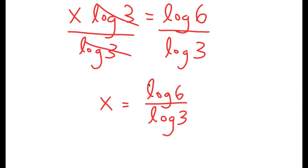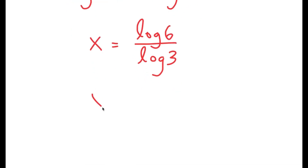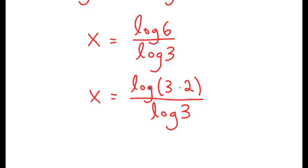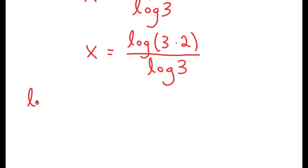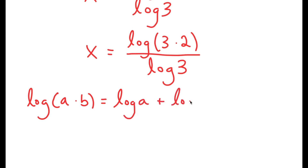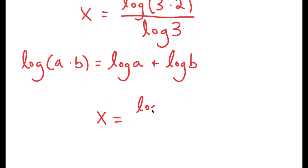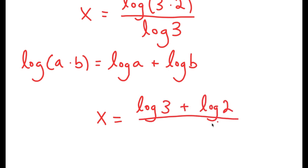What I'm going to do is rewrite log 6 as log of 3 times 2. So I have log of 3 times 2 over log 3. And if I have something in the form log of a times b, this is equal to log a plus log b. So log of 3 times 2 is equal to log 3 plus log 2, and I have this over log 3.